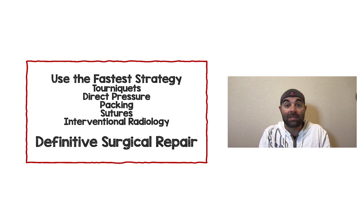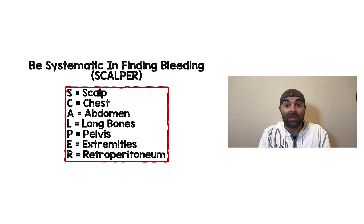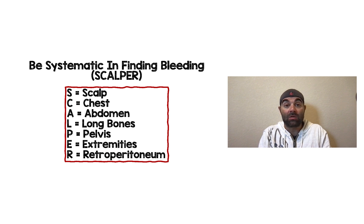Sometimes it's not as sexy as going to the OR, but there are lots of things we can do to try and control that bleeding. There's so much chaos going on that we want to make sure we're being systematic in finding our bleeding source. I like to use the acronym SCALPER: S is for scalp, C is for chest, A is for abdomen, L is for long bones, P is for pelvis, E is for extremities, and R is for retroperitoneum. Some of these we can see externally; others will require imaging like ultrasound or CT scan. Just make sure you're being systematic in looking for that bleeding and not missing things.